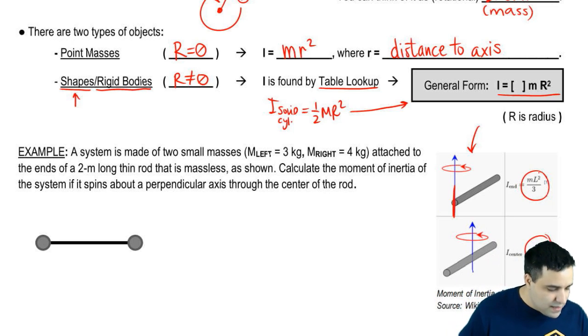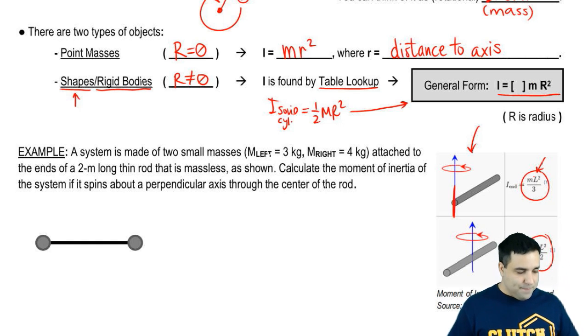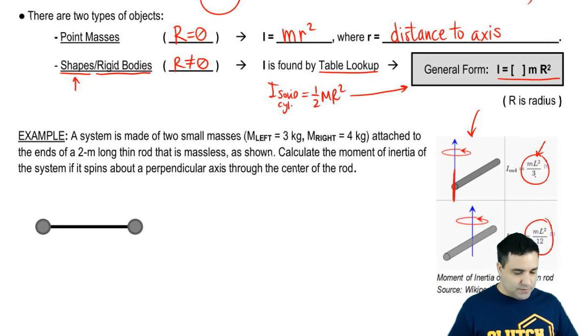But it's the length of the rod. But even then, you see that instead of mr squared, it's ml squared. So you should expect to see something like that.